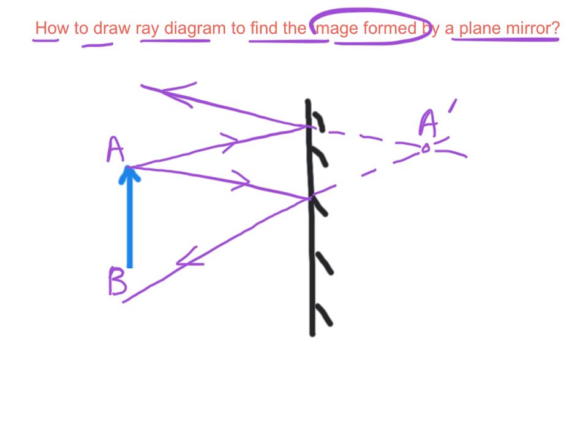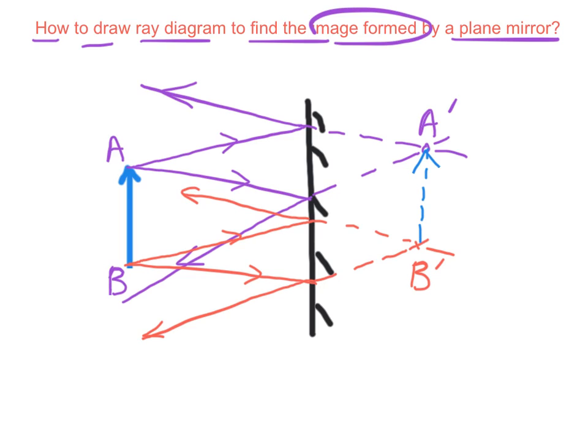Similarly, draw two light rays from B towards the plane mirror and draw their respective reflected light. Produce these two reflected light rays. They will meet at point B prime, which is the position of the image of B. Then, use the straight line to draw A prime B prime, which is the position of the image of AB.